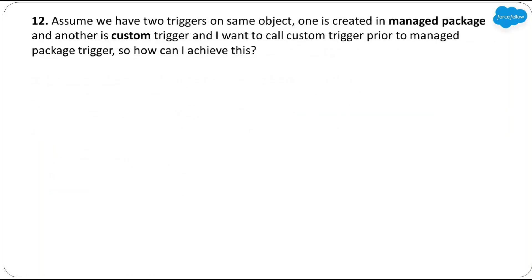Next question: assume we have two triggers on the same object — one created in a managed package and another a custom trigger. I want to call the custom trigger prior to the managed package trigger. How can I achieve this? We all know we can't control order of execution when we have multiple triggers on the same object. The answer is the same whether triggers are custom or in a managed package — order of execution can be anything and we can't control it.